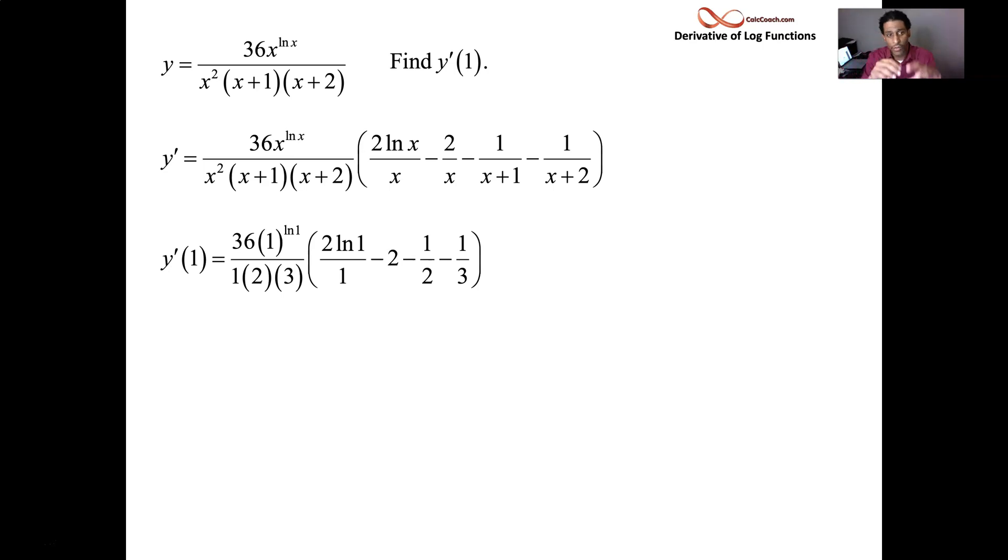This other part, natural log of 1 is 0. So, that first part goes away. And then we put 1s in these denominators. We have a minus a 2, a minus a half, and a minus a third.